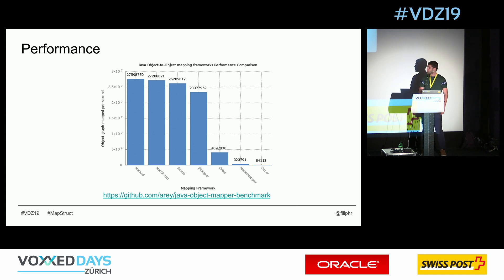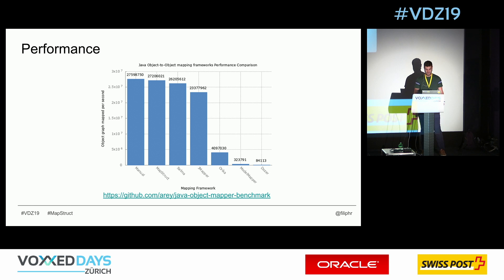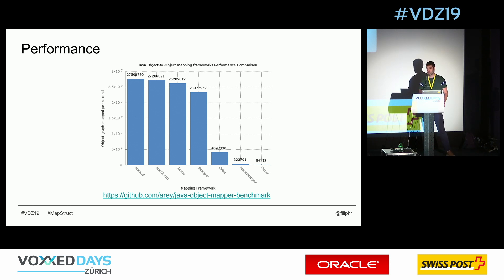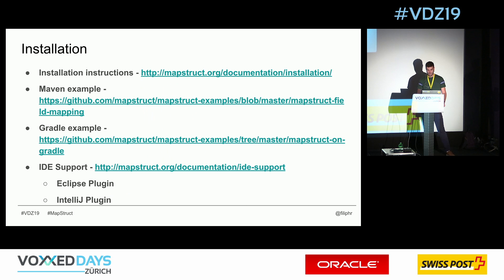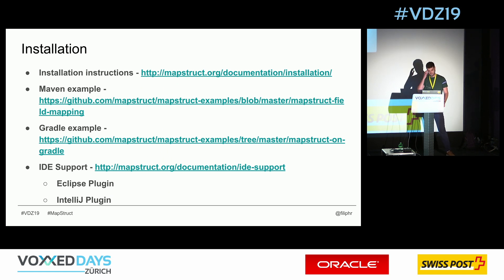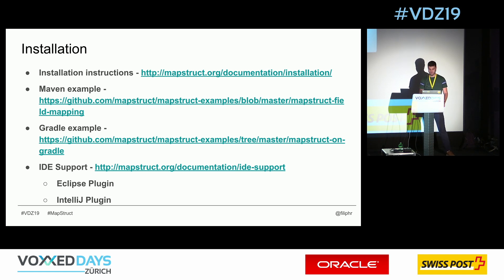For performance measurements, MapStruct is the second one from the left in this benchmark. The first one on the left is manual code, so MapStruct is as fast as writing manual code. This is an independent benchmark across different mapping frameworks — it was not done by us in the MapStruct project. Installation is straightforward: there are examples for Maven, Gradle, and links to IDE support like the Eclipse or IntelliJ plugin.